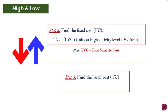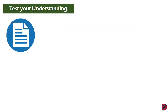Step three: find the total cost for any preferred activity or production level by adding the fixed cost and the total variable cost. Let's quickly test our understanding — maintenance costs for the first four months of 2015 are as follows.